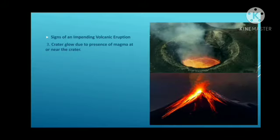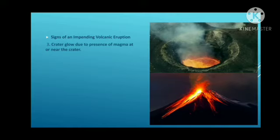Another sign is crater glow due to the presence of magma at or near the crater. The crater glow is likely caused by hot magmatic gases heating the overlying atmosphere. Crater glow suggests the possibility that remnant magma may be quietly rising to the surface beneath a volcano.